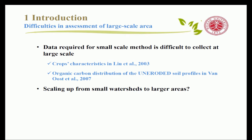The first difficulty is that data required for small-scale methods are very difficult to collect at larger scales. For example, some methods suitable at small scale require crop characteristics, and another method requires the vertical distribution of organic carbon in un-eroded soil profiles. These data are all very difficult to acquire at a very large area.